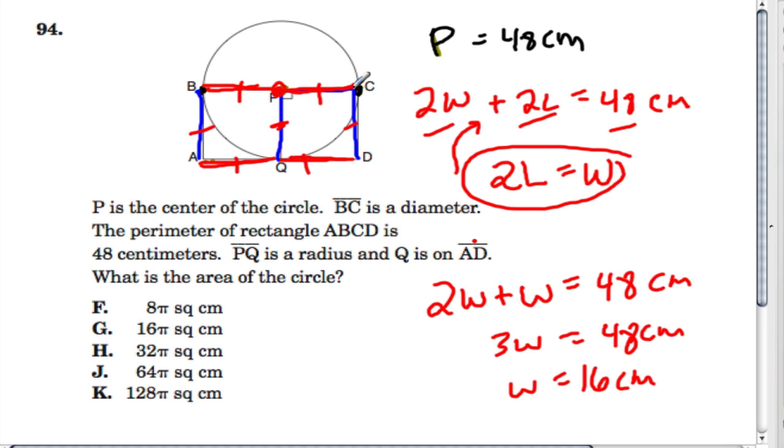So what does that mean? Well, we said this whole thing right here is the width. So that means that the radius is going to be 8, half of the width or diameter, because the radius equals one half of the diameter. So in this case, 8 is our radius.